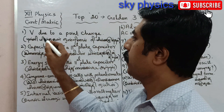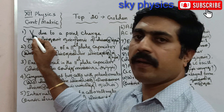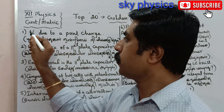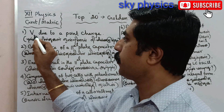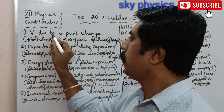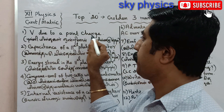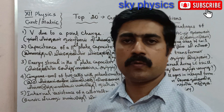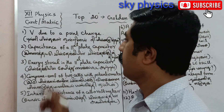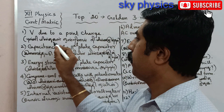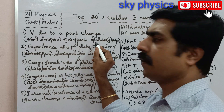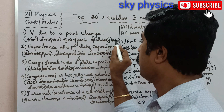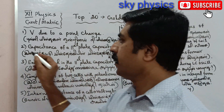First question: V is the electrostatic potential due to a point charge — that is the expression. (Tamil: Oru binduvinil Nilayminna Lutthom — one question.)